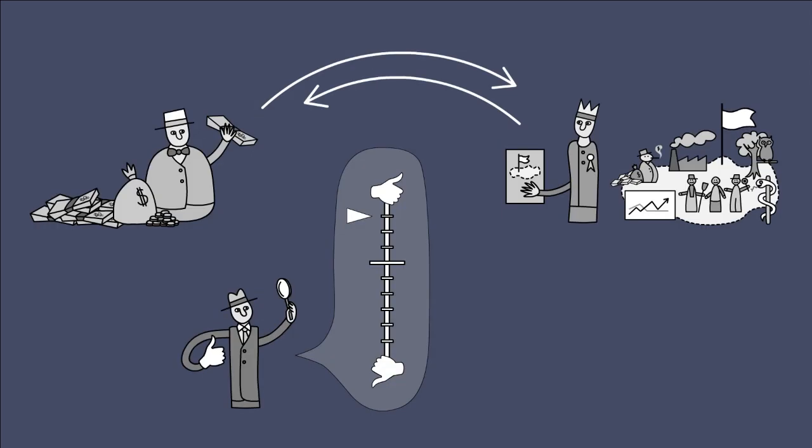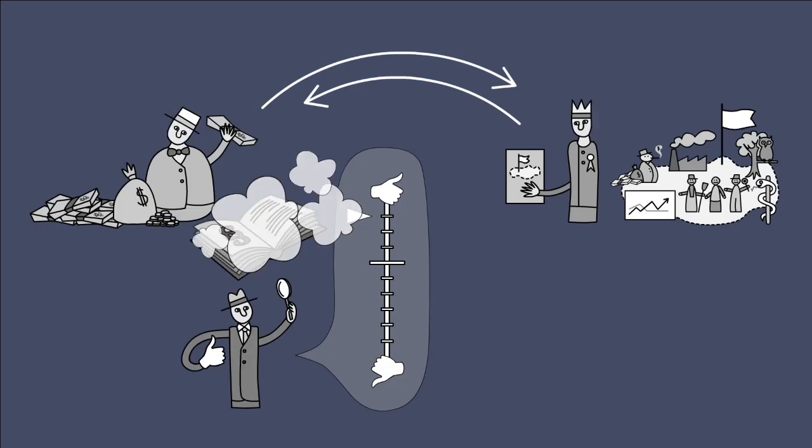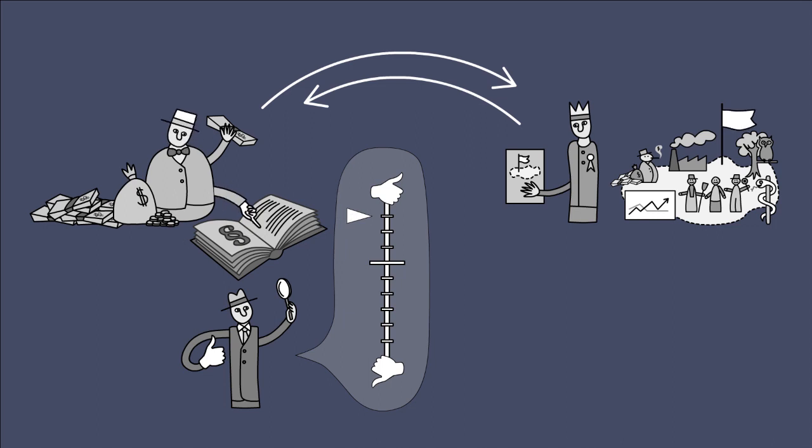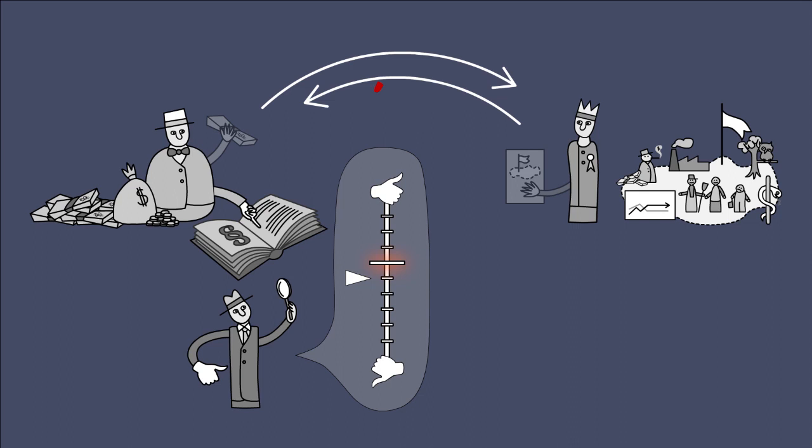In many countries, certain reactions to credit ratings are prescribed by law. For example, if the creditworthiness of a country or company slips below a certain threshold in the opinion of the rating agencies, then the investment is considered speculative, and in many countries investors are forced to sell the affected bonds.